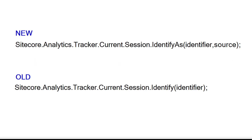To identify contacts we will be using Sitecore.Analytics.Tracker.CurrentSession.IdentifyAs, and we will be passing two parameters: Identifier and Source. Both parameters are strings, and we will be using this function in Sitecore 9. In older versions of Sitecore we will be using Sitecore.Analytics.Tracker.CurrentSession.Identify, passing only one parameter: Identifier. As an identifier you can use an email address, a membership ID, or a username.